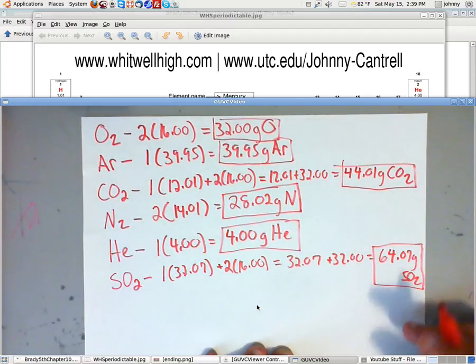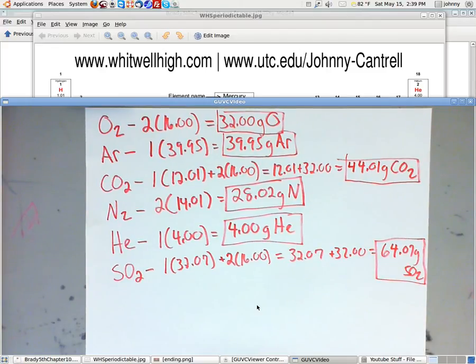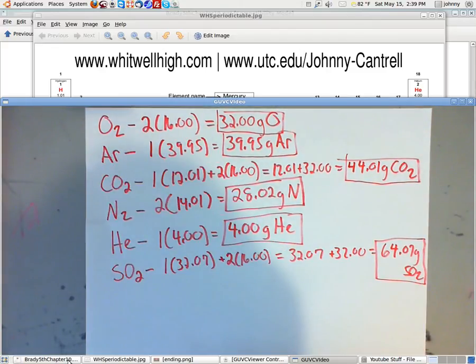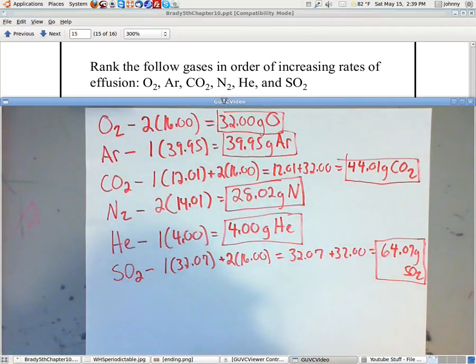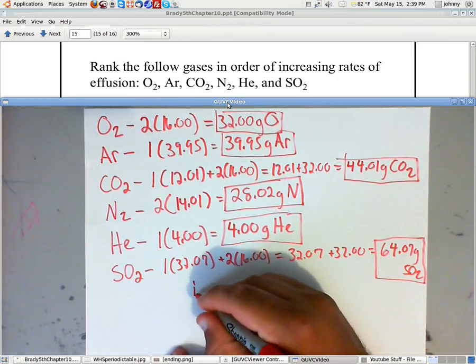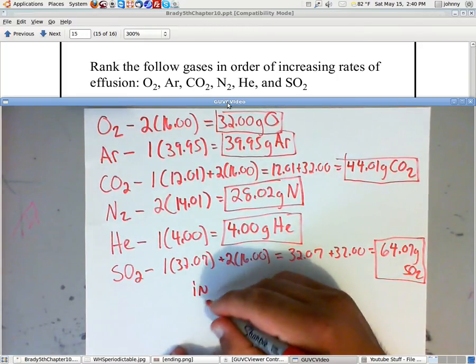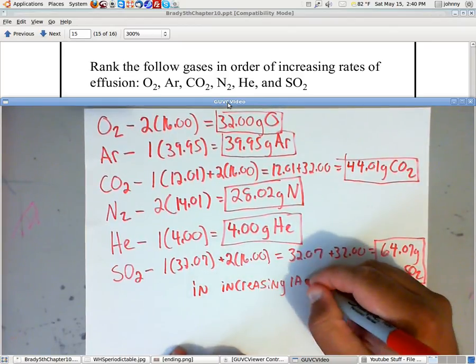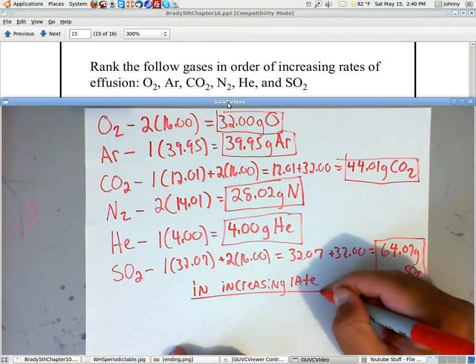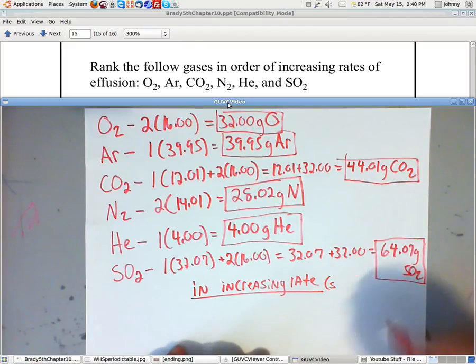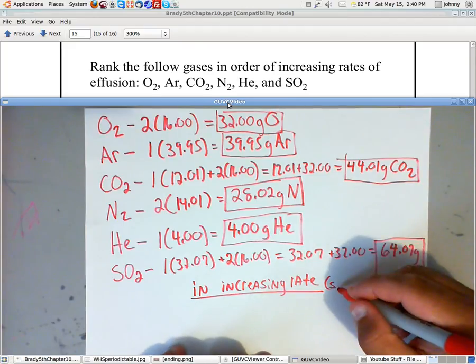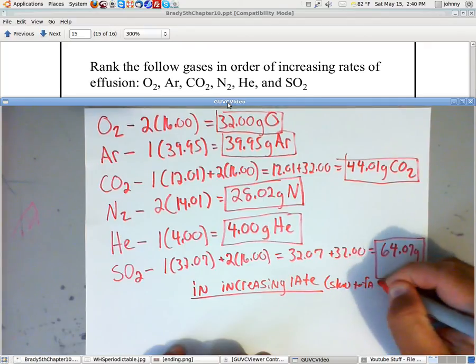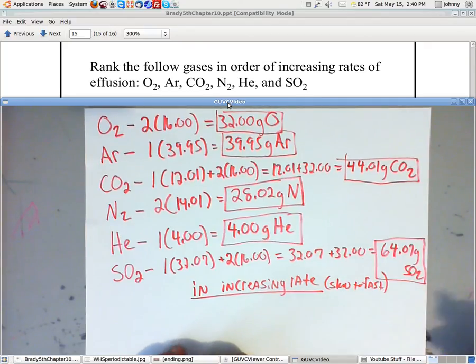All right. Now, remember, the lightest gas moves the fastest. So the question stated that they wanted us to put these in order of what? I don't know. We'll have to look again. Rank the following gases in order of increasing rates of effusion. So increasing rates means in increasing order. Meaning if you're increasing, then that means small to large, basically from slow to fast. Because it says an increasing rate. So the fastest would be to the right.